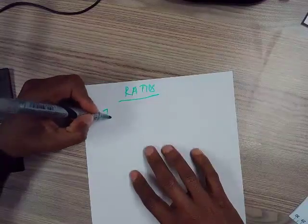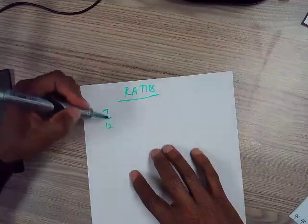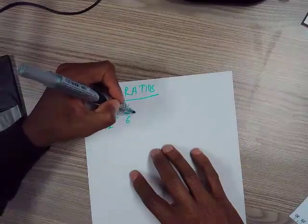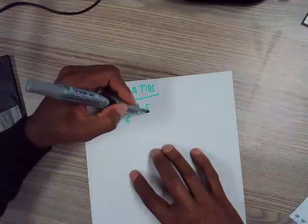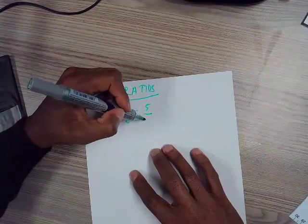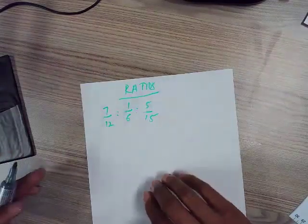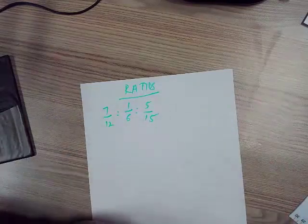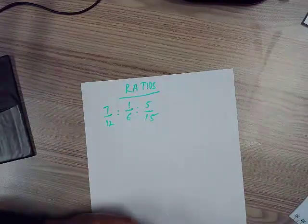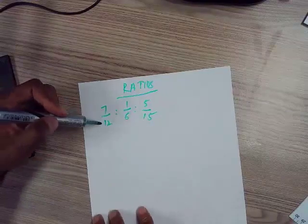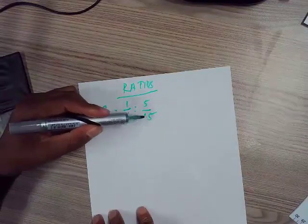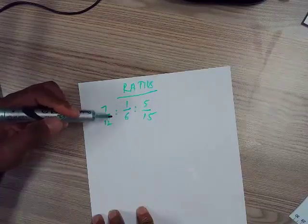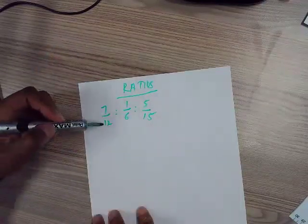Okay, let's say you have a ratio like this with fractions. So now how do you simplify a ratio like this? You make sure that the denominator is the same. Why? It will make it easy for you now to start simplifying because then you can get rid of there.